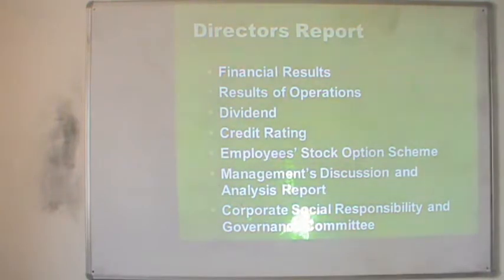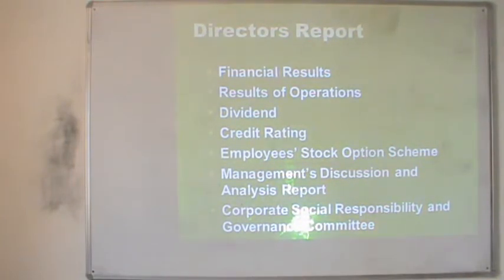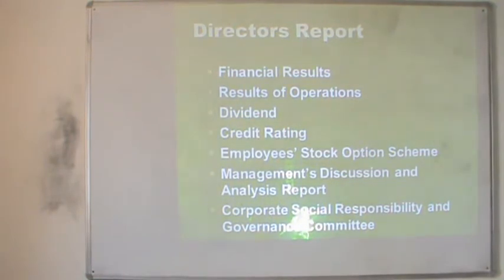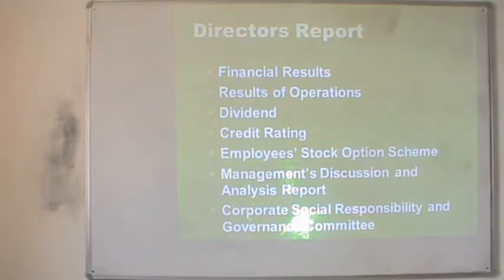The second part is results of operation — the company's work in a particular production area or country and the profit or loss from that country. The third part is related to dividend, which is of major concern for the investor. The dividend proposed by the company to be given to shareholders is included in the director's report. This is the proposed dividend, and once it is accepted in the annual general meeting, it will be distributed to the shareholders.